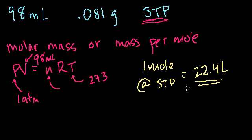And I'm normally not a big fan of memorizing things, but this might be something handy to memorize if you want to get through your chemistry test fast. But you can always derive this if you know what standard temperature and pressure is by PV equals nRT.